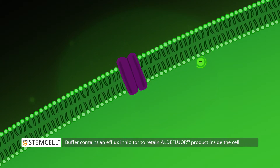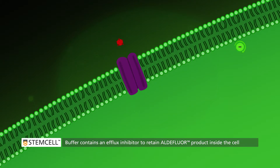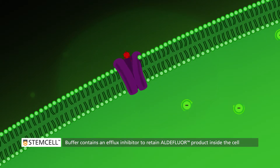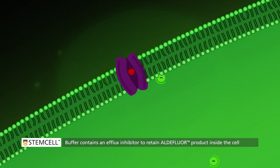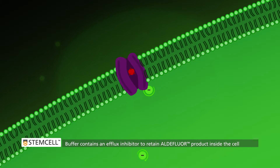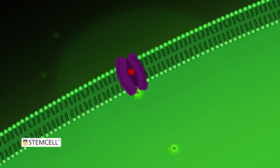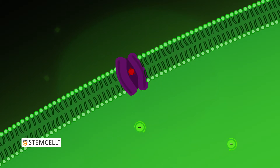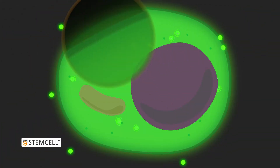By including an efflux inhibitor in the Aldiflor buffer, the fluorescent BAA negative is retained and will build up inside the cell.